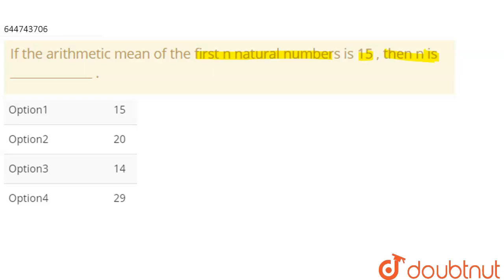Let's start our solution. Here we know what is first n natural numbers - that is 1, 2, 3, 4, up to n. So this is first n natural numbers.